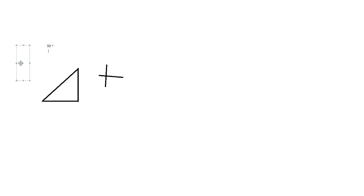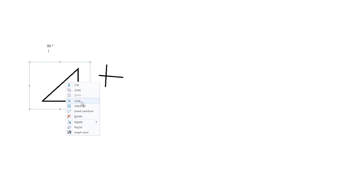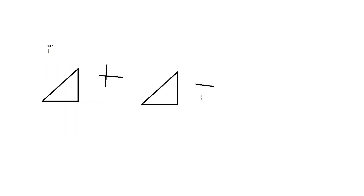This is an introduction to geometry. The most basic of all angles is the right angle, which is a 90 degree angle. 90 degrees plus 90 degrees equals 180 degrees.